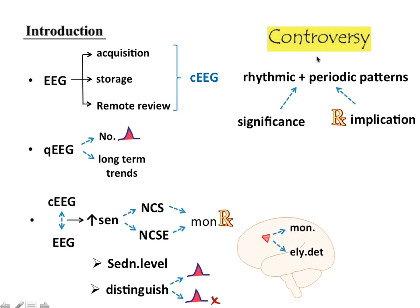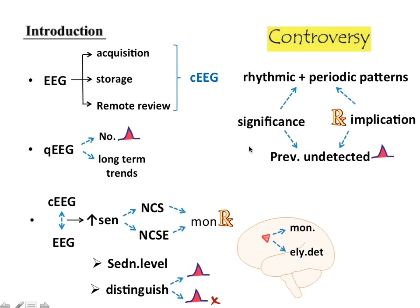There are controversies surrounding continuous EEG. Certain rhythmic and periodic patterns called periodic epileptiform lateralized discharges occur, and we do not know for sure whether to call them seizures or what their significance is. These periodic epileptiform discharges (PEDs) were previously undetectable without continuous EEG, and whether they should be treated remains a controversy.